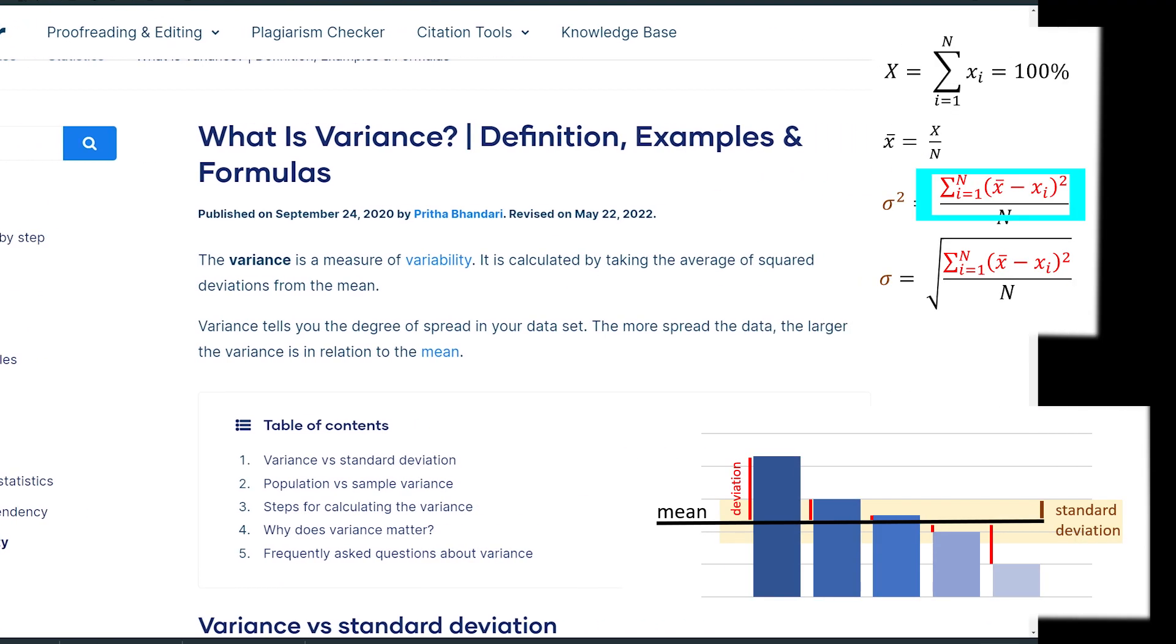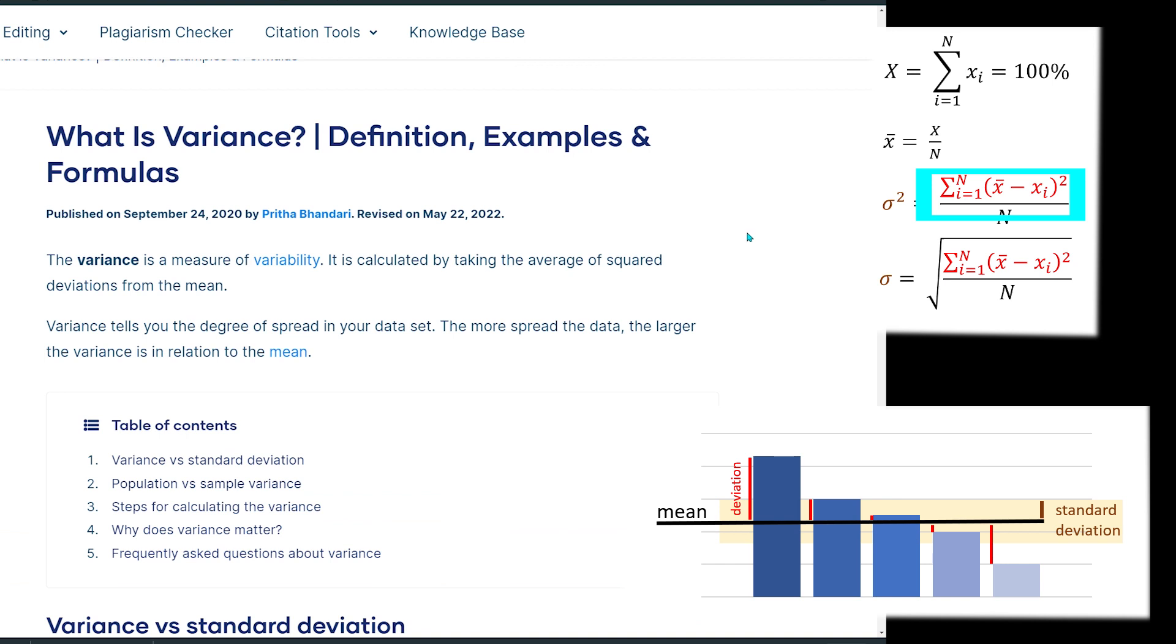The variance is a measure of variability. It is calculated by taking the average of squared deviations from the mean. Variance tells you the degree of spread in your data set. The more spread the data, the larger the variance is in relation to the mean.